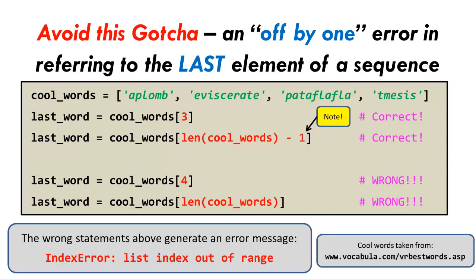Similarly, since the len function, the length function, returns 4 as the length of the sequence, using the length minus 1 as the index also refers to the last item and is perfectly fine.